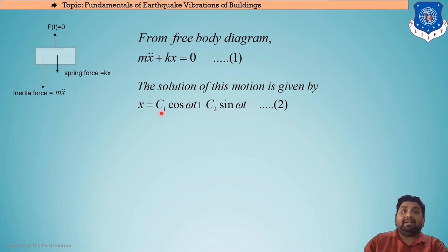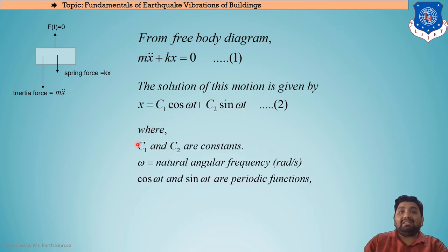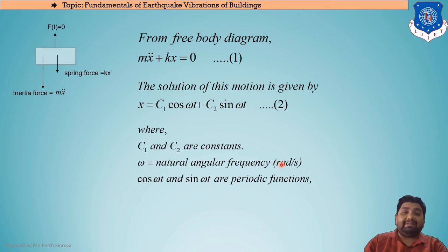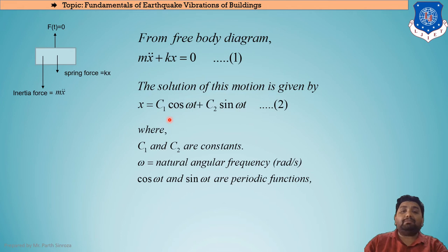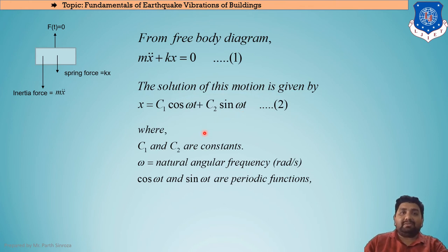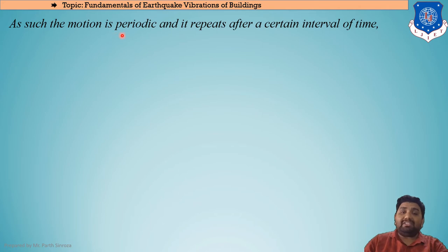So x = C₁cos(ωt) + C₂sin(ωt) is our displacement, where C₁ and C₂ are constants and ω is the natural angular frequency in radians per second. cos(ωt) and sin(ωt) are periodic functions. However, this is not the final form — we cannot leave the answer in terms of unknown constants, so we need to determine C₁ and C₂.